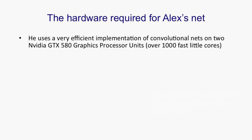Alex couldn't have done this work without significant hardware, but the hardware only costs a few thousand dollars now. Alex is a very good programmer and used a very efficient implementation of convolutional neural nets on two NVIDIA GTX 580 graphics processors. Each of these has over 500 fast little cores, which are very good at doing arithmetic. The GPUs are very good at doing matrix-matrix multiplies.